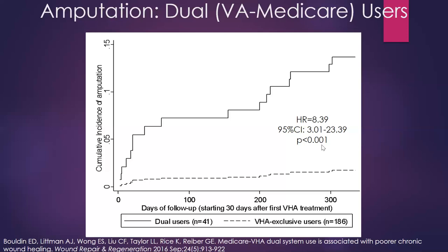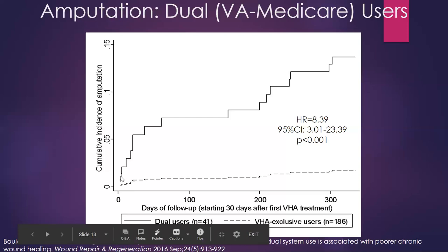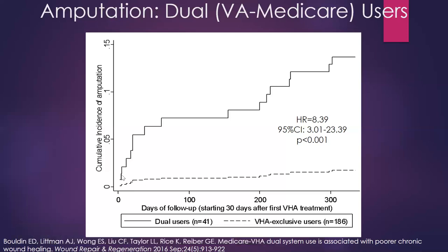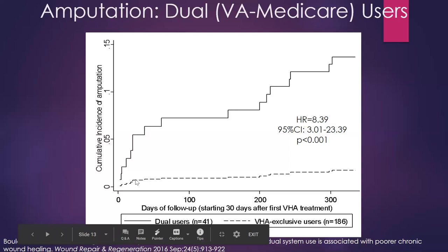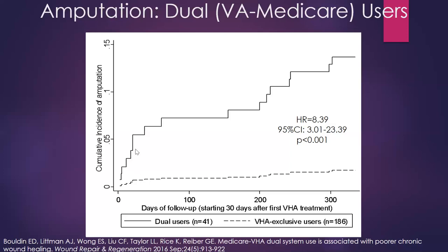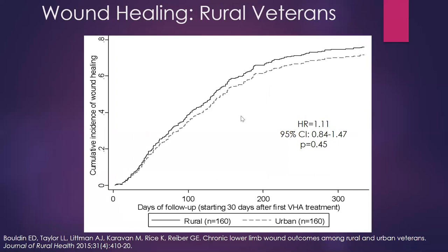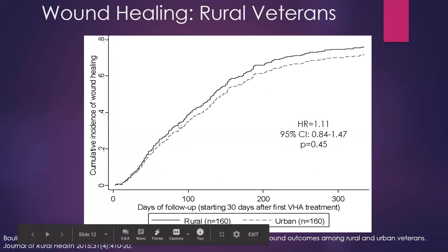The dual-user line looks stair-step like because of the smaller number of people. These curves show each day someone had an amputation; every time there was one, the incidence increases as the denominator changes. A big jump represents more than one person having an amputation on a particular day — maybe around day 40 of follow-up. The other line looks more like a smooth curve simply because there were more people in that group.